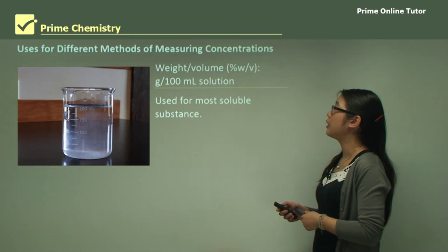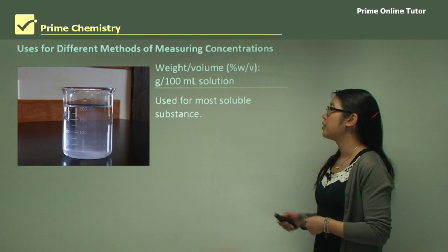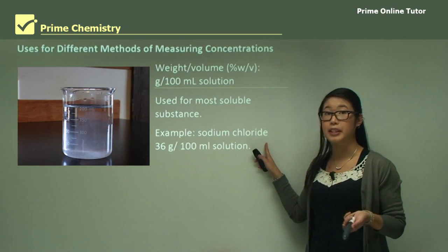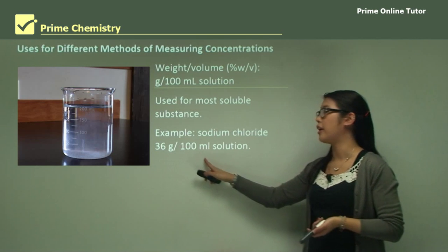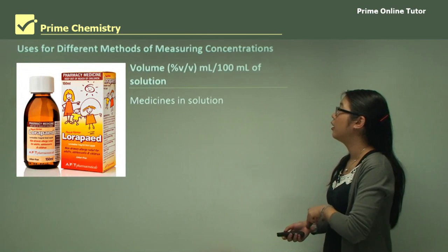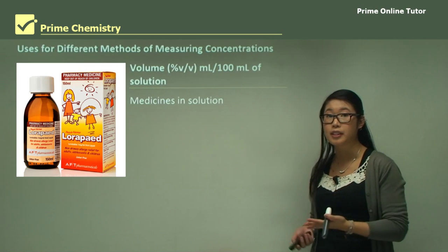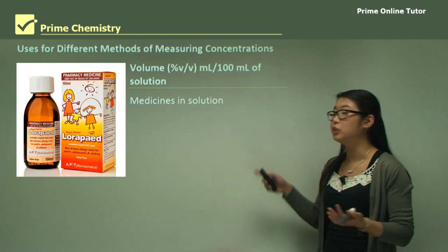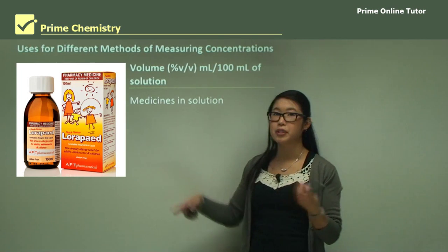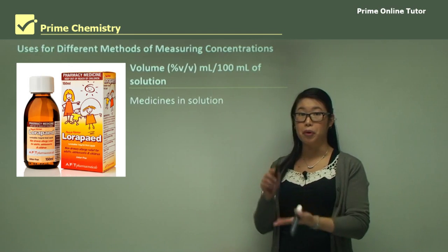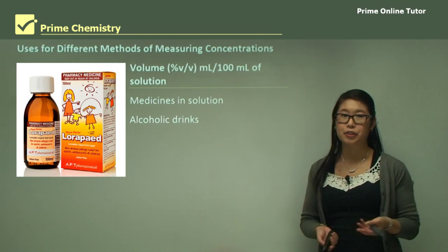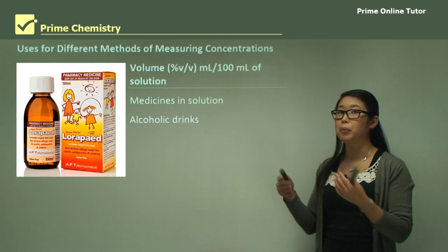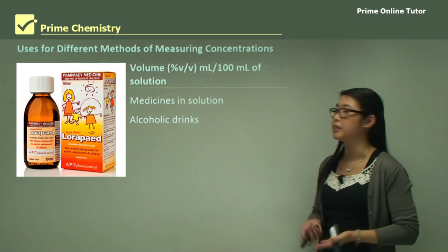Similarly, weight-to-volume percentage is usually used for very soluble substances like sodium chloride — for example, 36 grams in 100 mils of solution. Volume-to-volume percentage looks at two sets of volumes and is used in medicines, telling you how much of the medication is in the bottle, and in alcoholic drinks — a bottle of wine will tell you the percent of ethanol, like 13% or 5%.